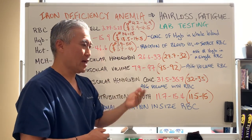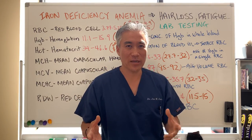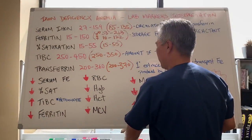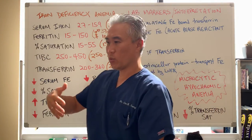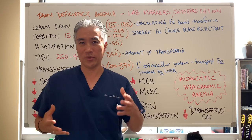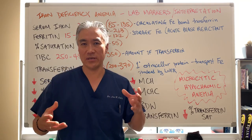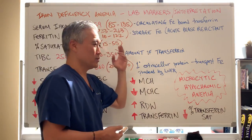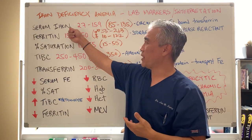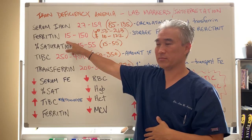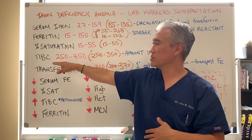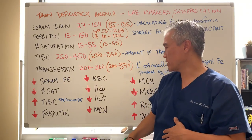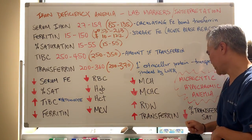So, iron deficiency anemia in lab testing. When we look at iron deficiency, we looked at what we call the CBC — a complete blood count — with all the different red blood cell markers like MCV. There are also other markers called iron markers. We have to look at serum iron, ferritin, percentage saturation, total iron binding capacity, and transferrin. There's also a percentage transferrin saturation number.